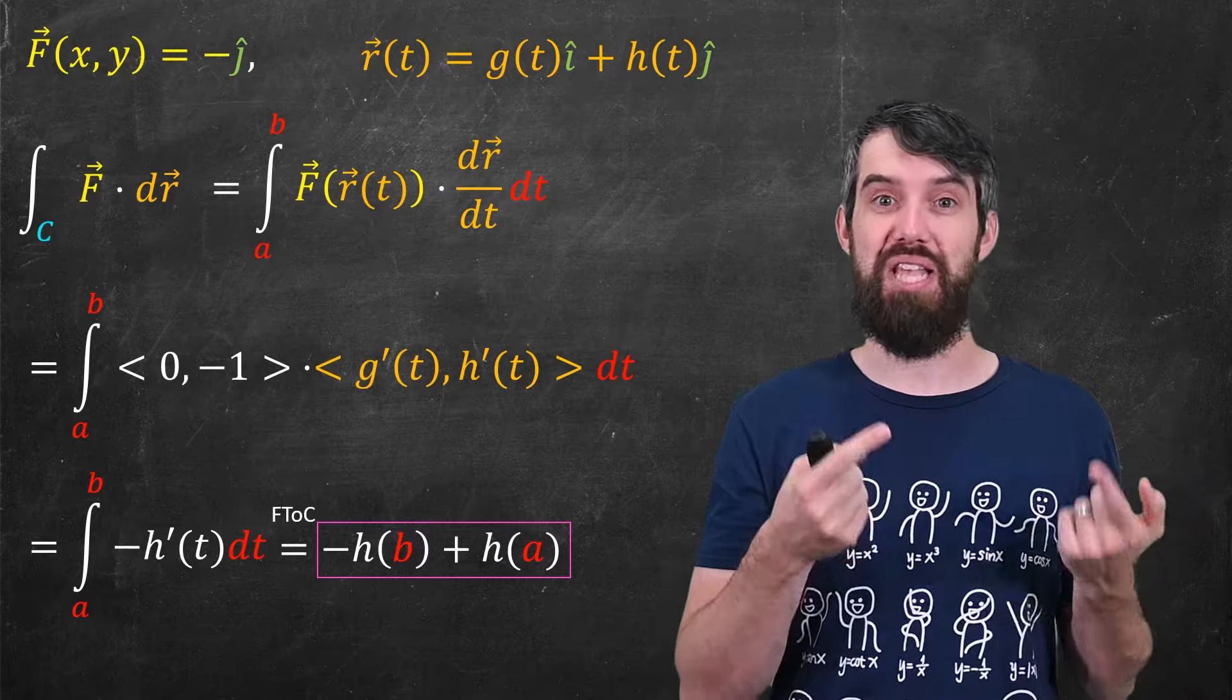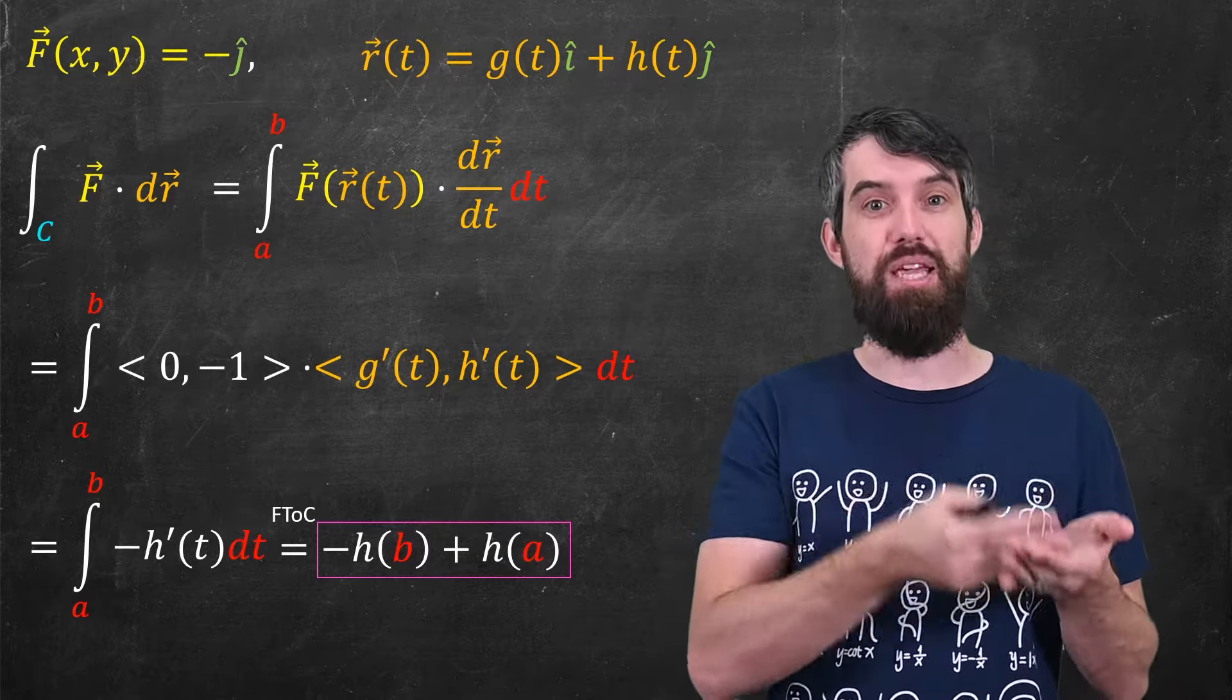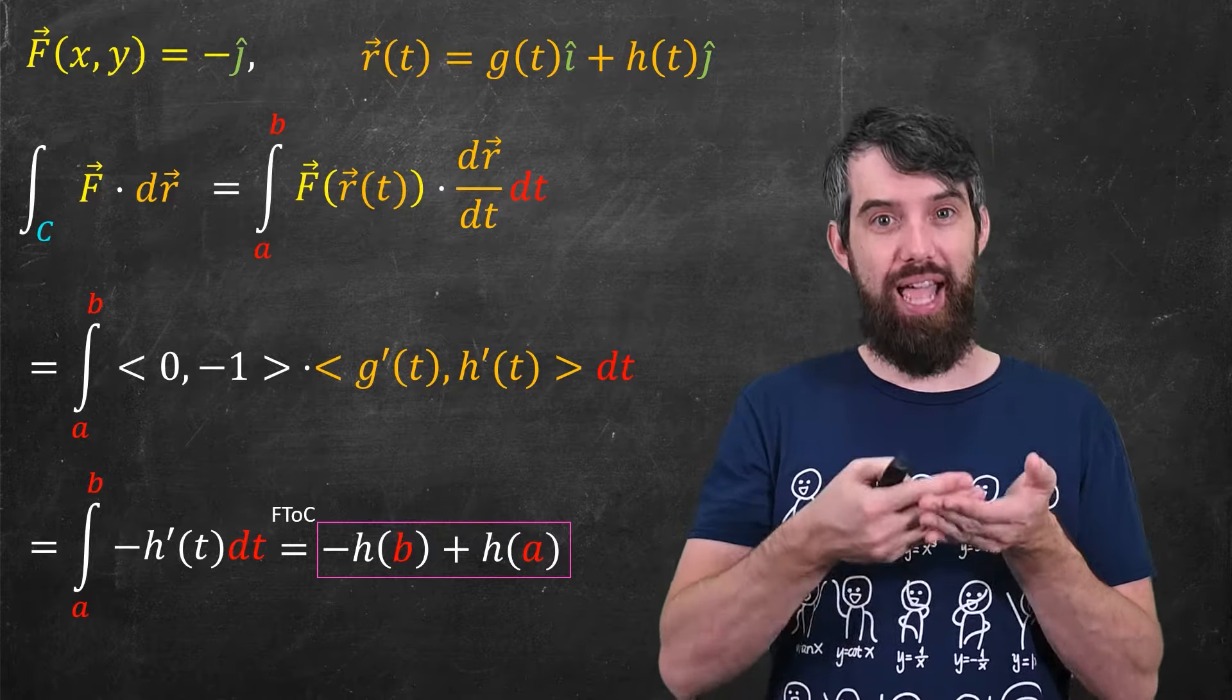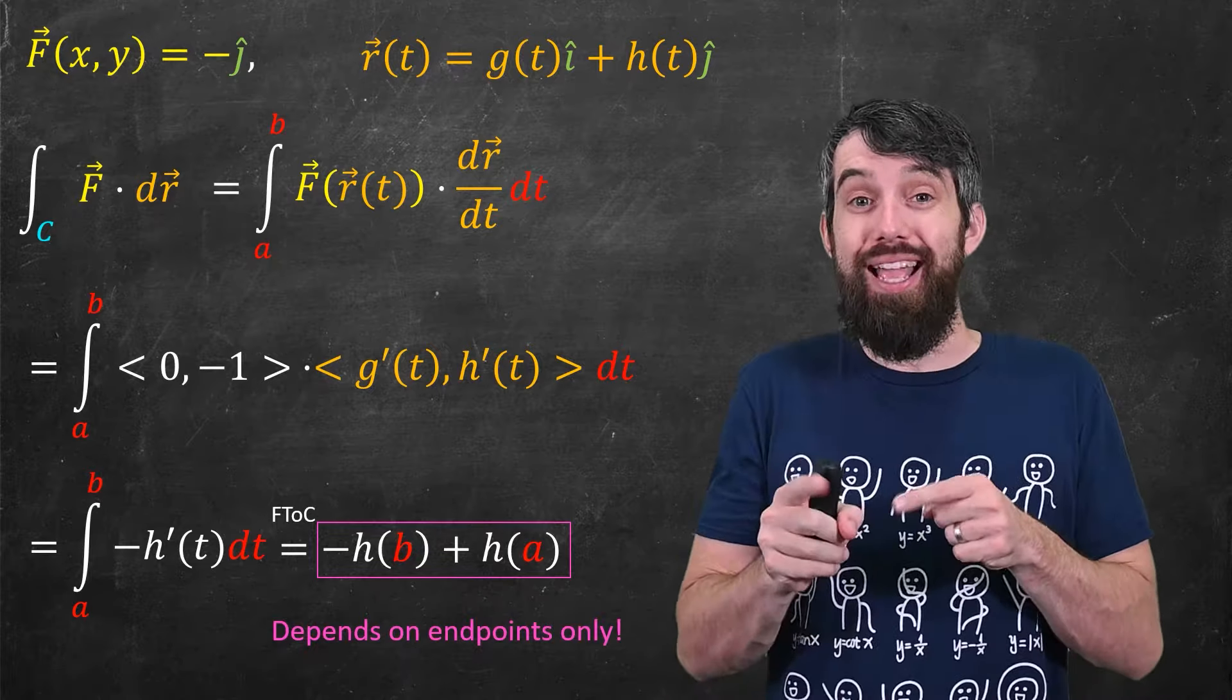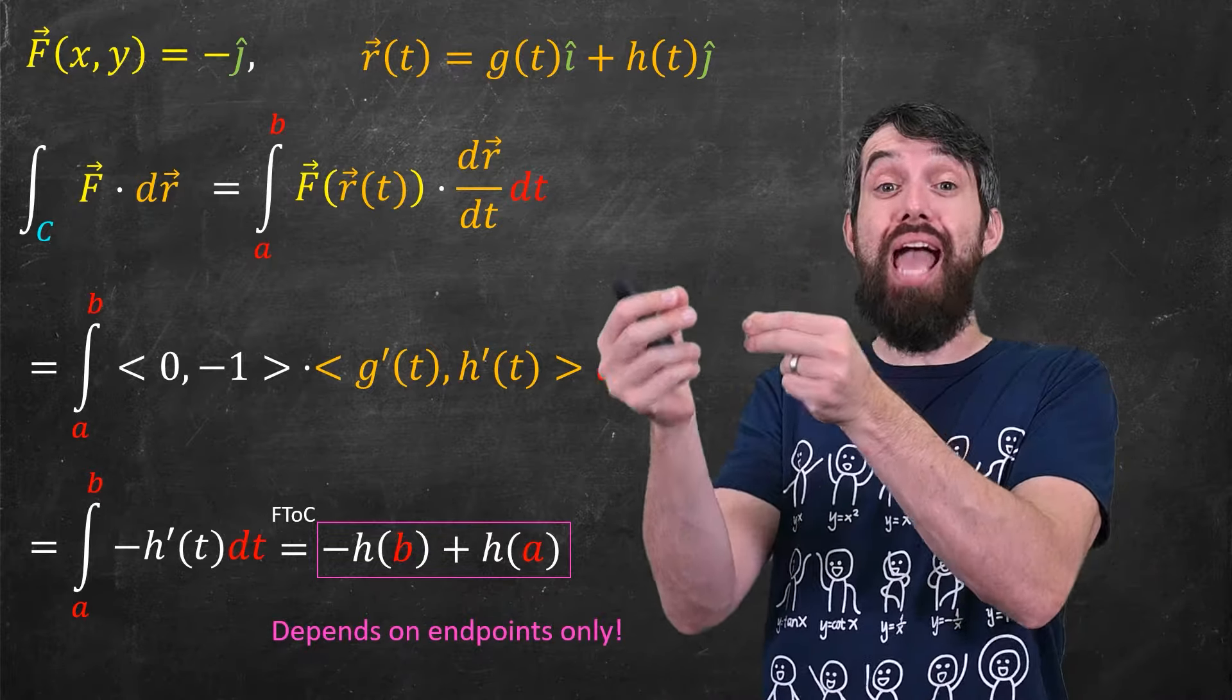This is therefore going to be negative, so I have a negative in there, of h of b minus minus, so plus h of a. That is, this integral, it only depended on the endpoints.